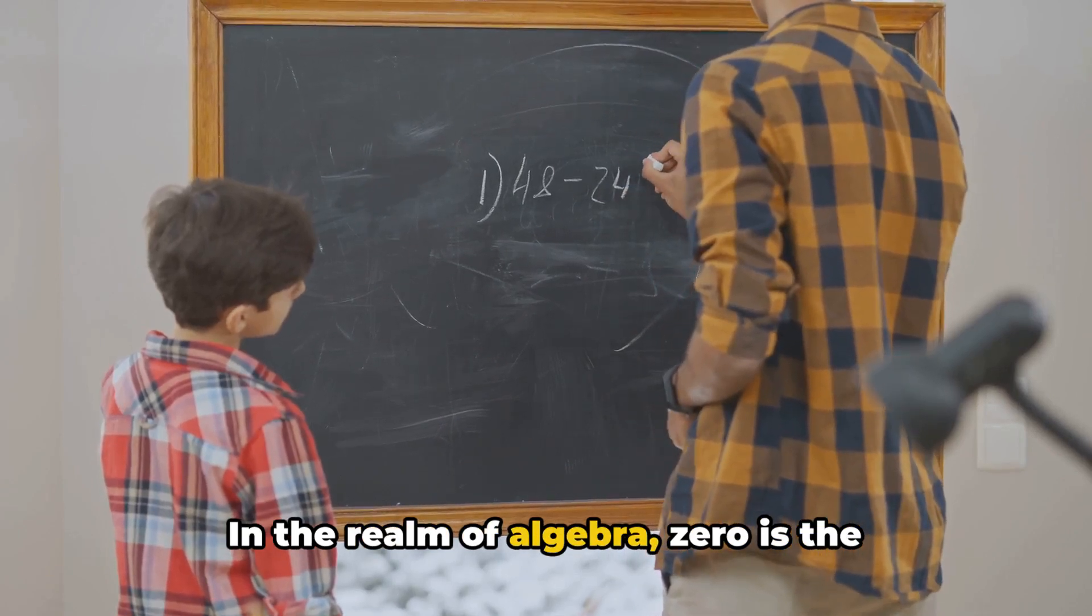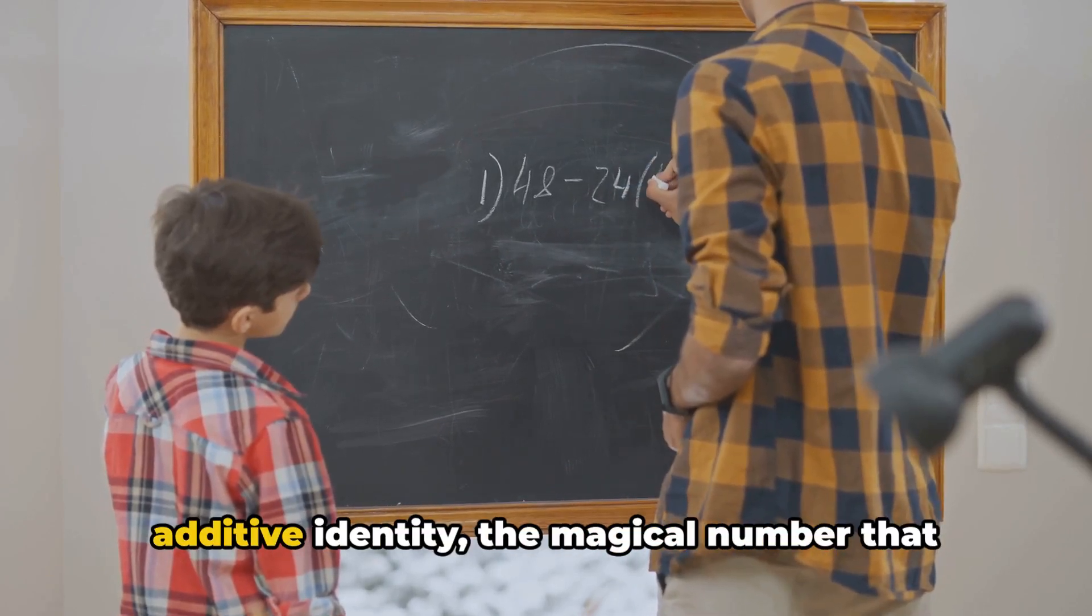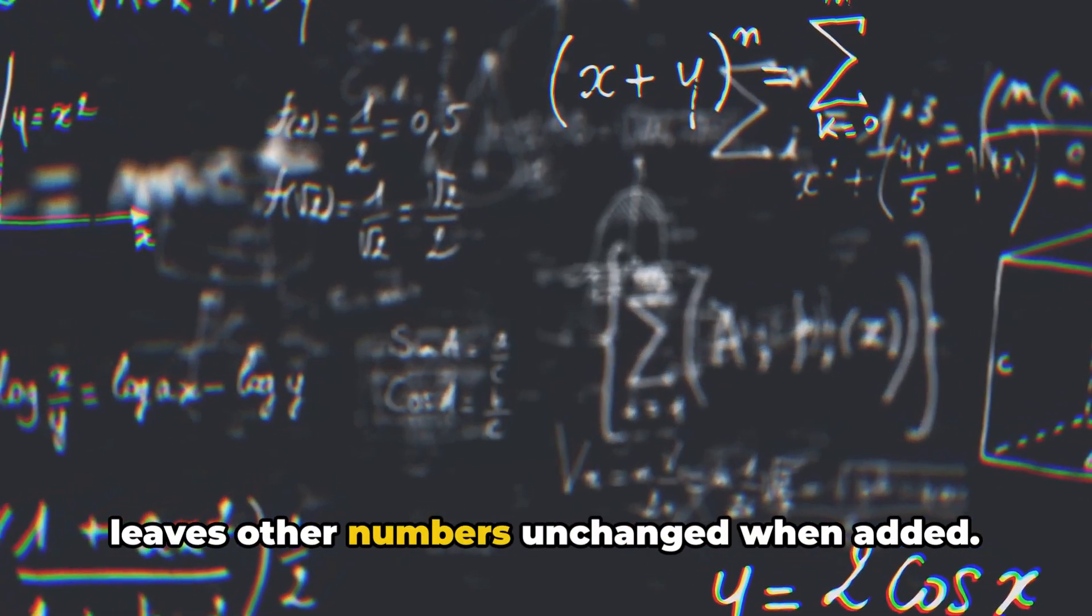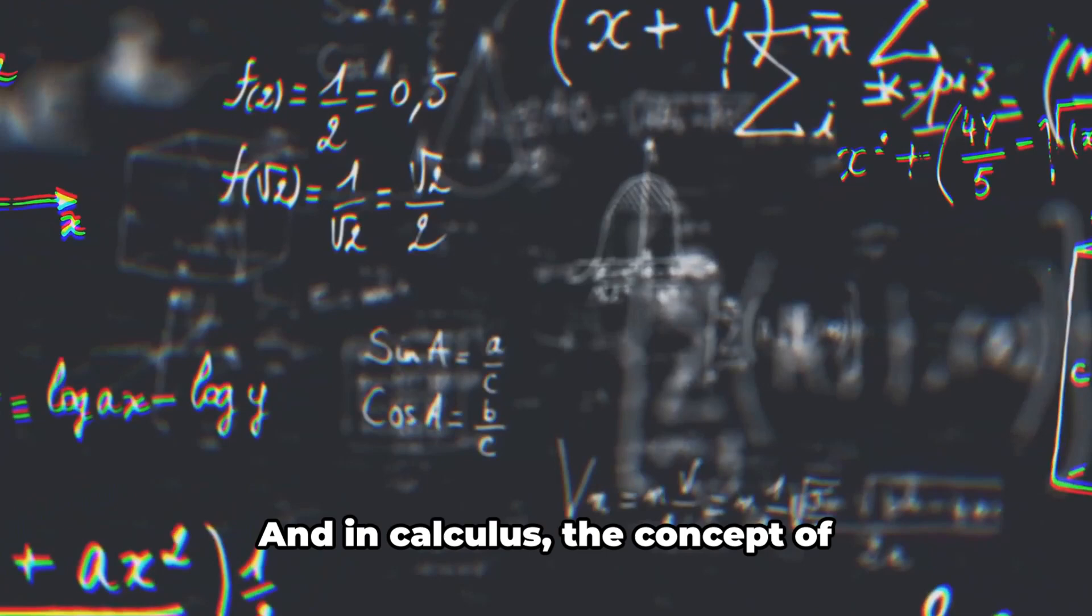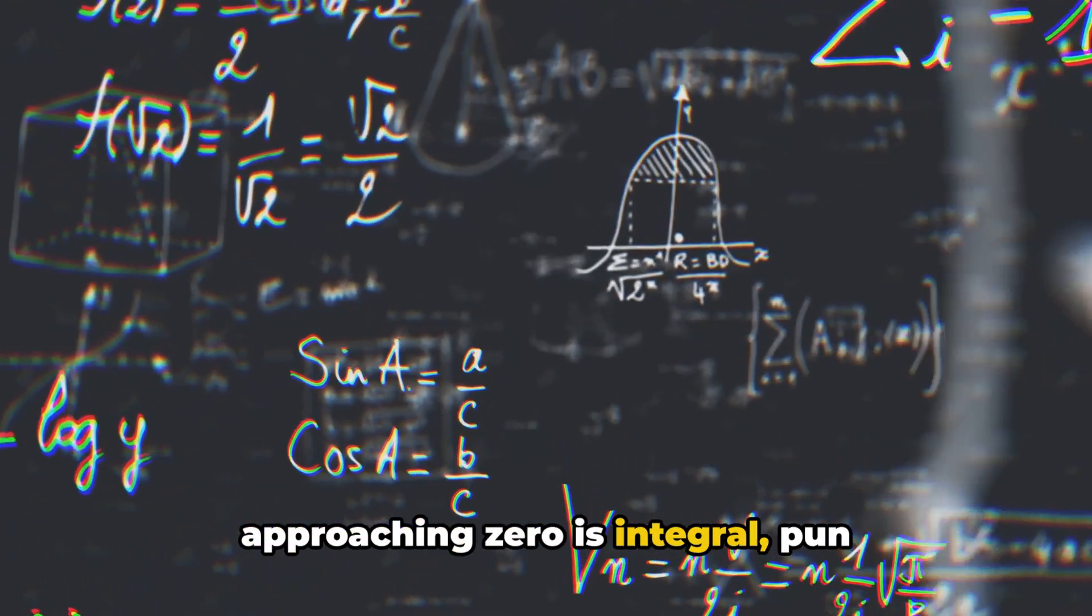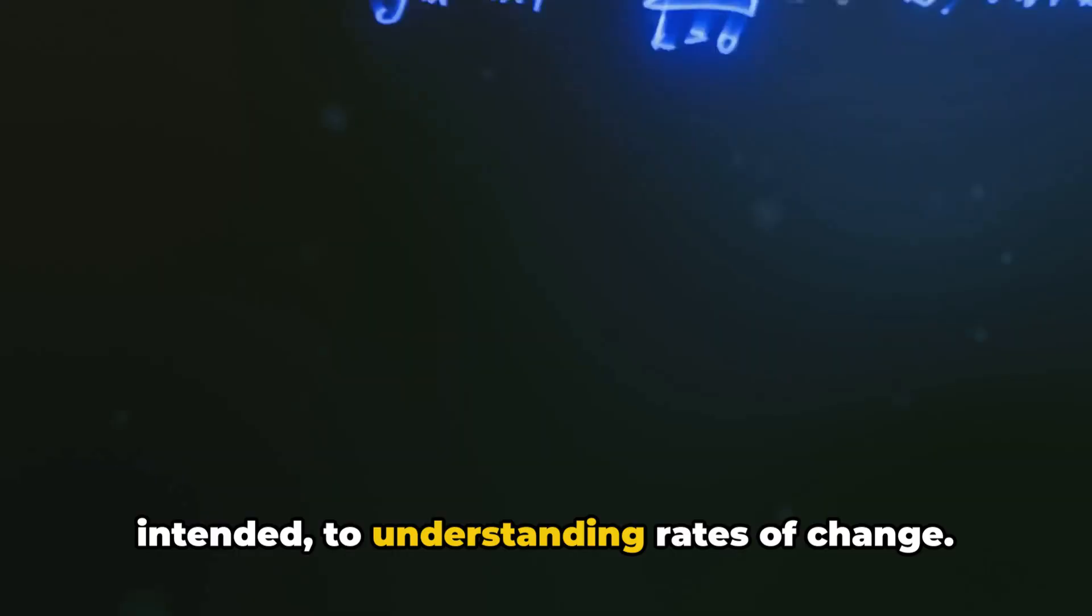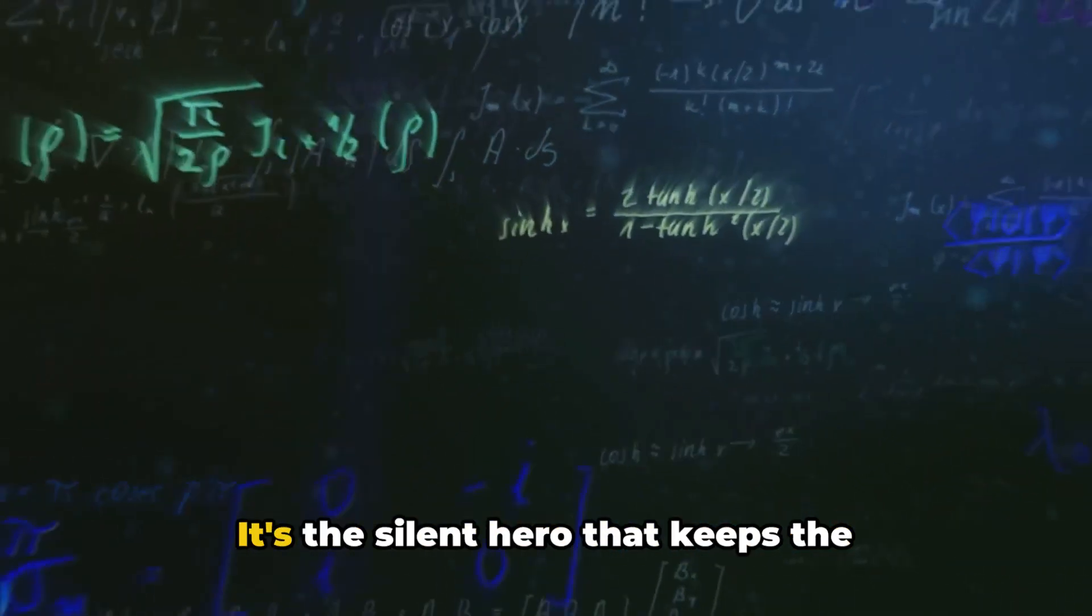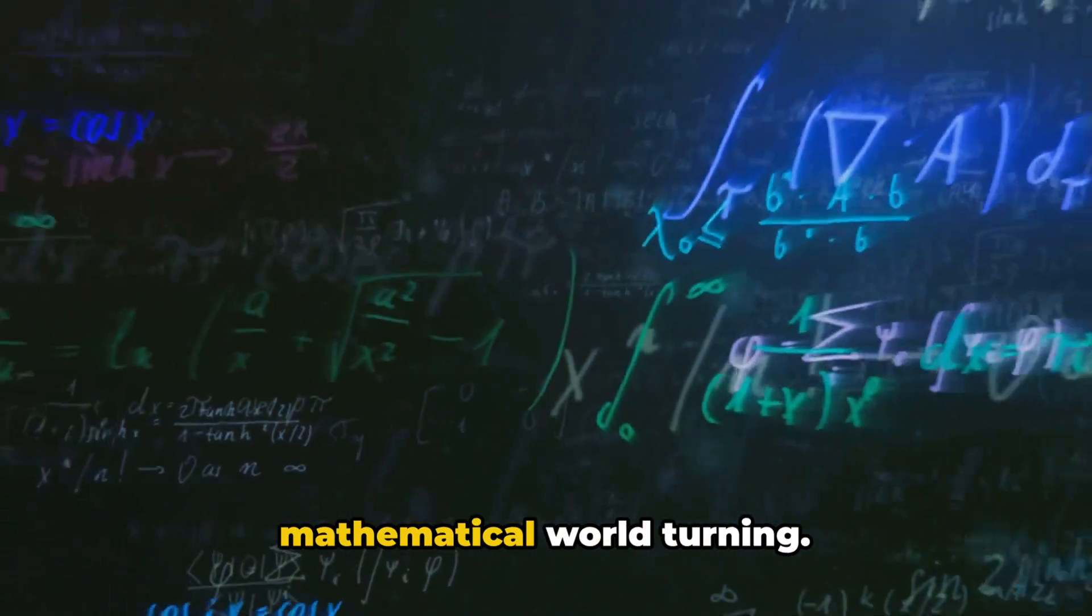In the realm of algebra, zero is the additive identity, the magical number that leaves other numbers unchanged when added. And in calculus the concept of approaching zero is integral, pun intended, to understanding rates of change. Without zero, our number system would be incomplete. It's the silent hero that keeps the mathematical world turning.